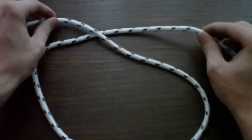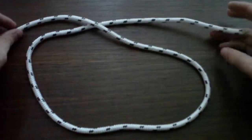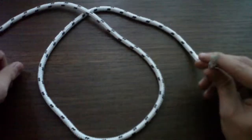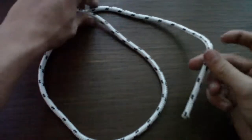We are going to start like this. We have the running end and a loop, we can make it shorter, and now we are going to pass it.